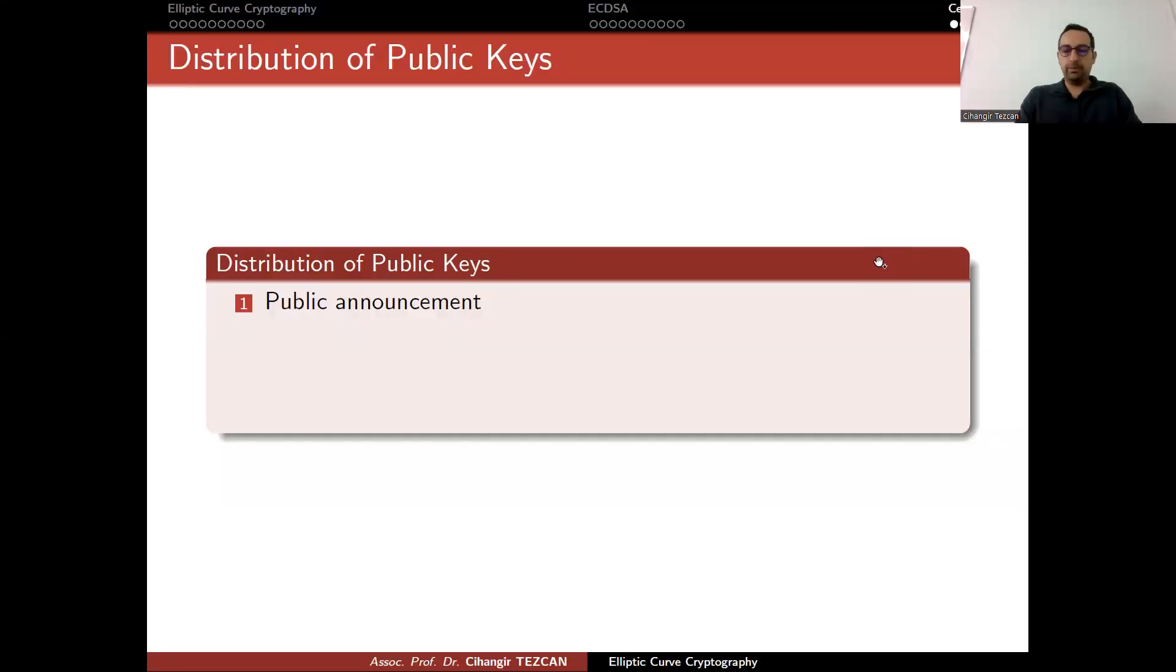All right. So with public key cryptography, one question arises: how can we distribute the public keys? In order for us to use RSA encryption or Elgamal encryption, we should know the public key of the person so that we can encrypt our message and send it to them so that they can decrypt.